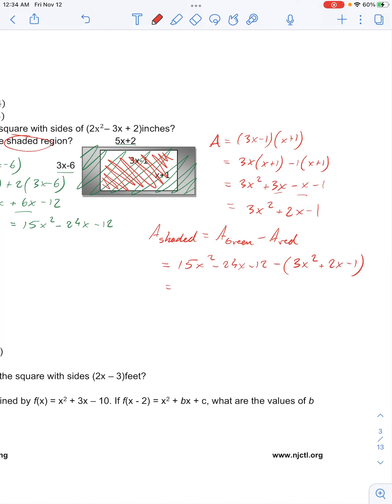Now we'll distribute that negative out, so we have 15x squared minus 24x minus 12 minus 3x squared minus 2x plus 1, because we have negative times negative 1.